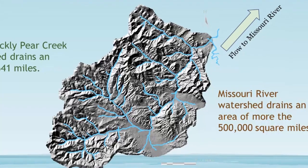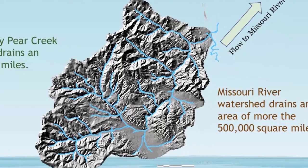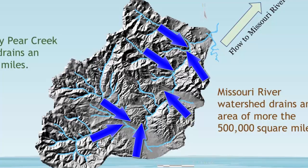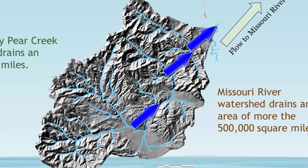For example, this is the Little Prickly Pear Creek watershed, a tributary of the Missouri River, which drains into the Mississippi River just north of St. Louis, Missouri. Both Little Prickly Pear Creek and the Missouri River are part of the Mississippi watershed. But as you can imagine, the Little Prickly Pear Creek watershed is just a minor portion of the Mississippi River watershed — it only drains an area of a little over 641 square miles.